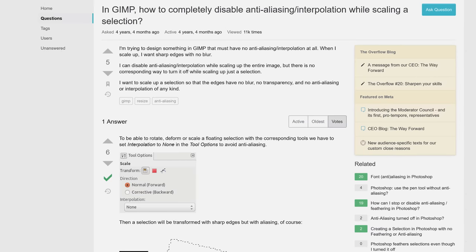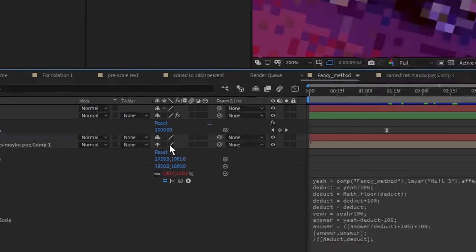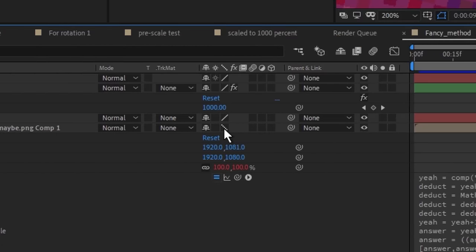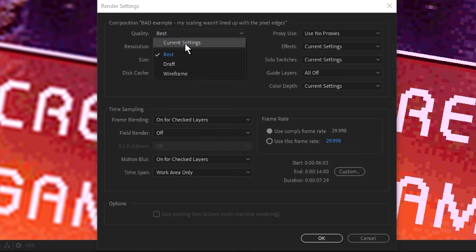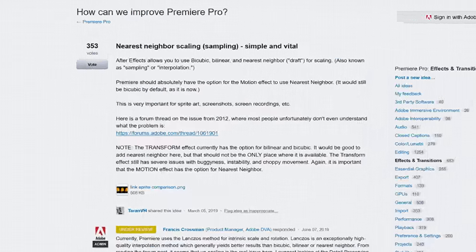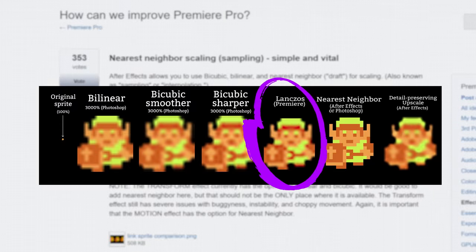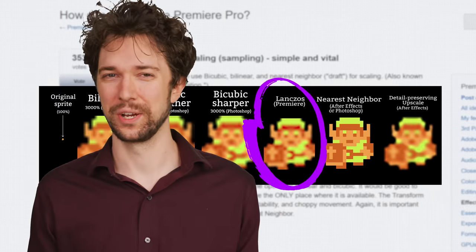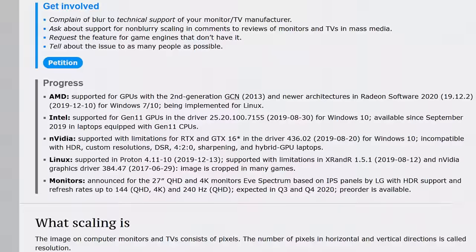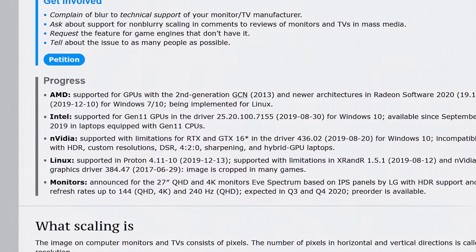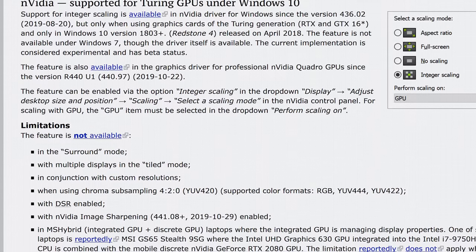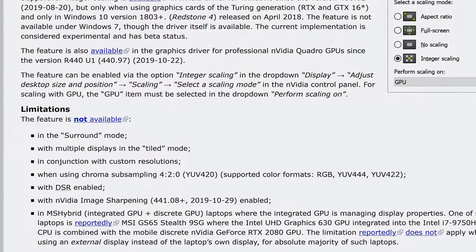And blurry pixel art is not just a problem for retro gamers. If you're a digital artist like me, you should know that programs like GIMP, Photoshop, and After Effects do have support for nearest neighbor if you know where to look. But some creative software, including Premiere, does not. It's annoying. Also, support for integer scaling from PC hardware manufacturers like AMD, Nvidia, and Intel has been getting better lately, but we've still got a ways to go.